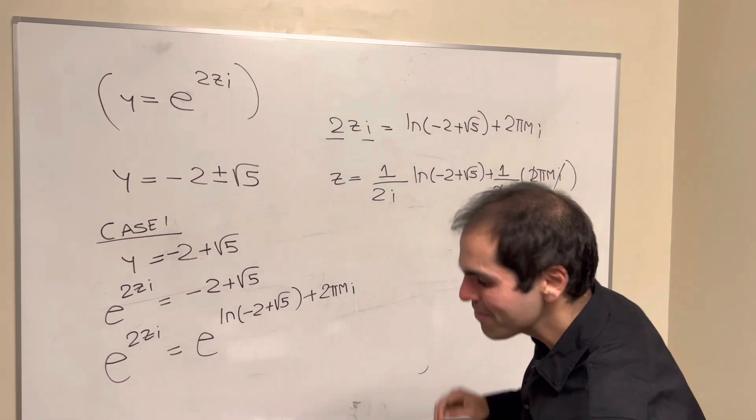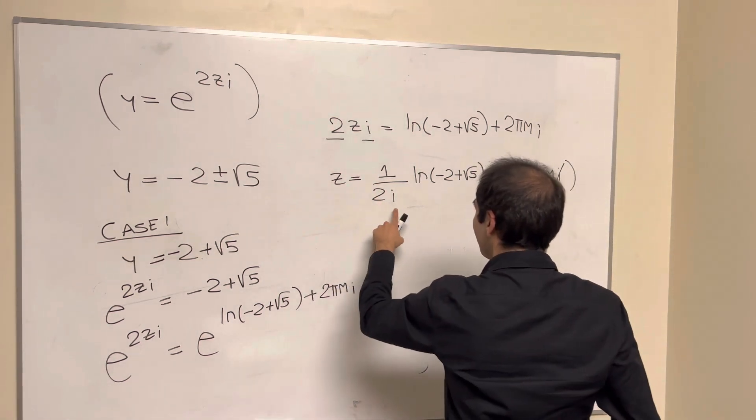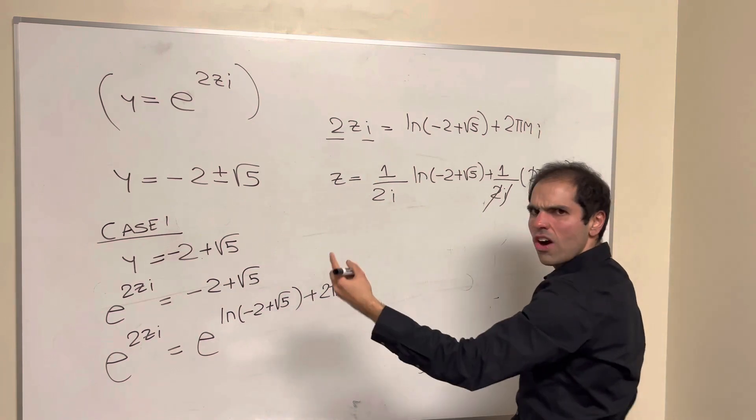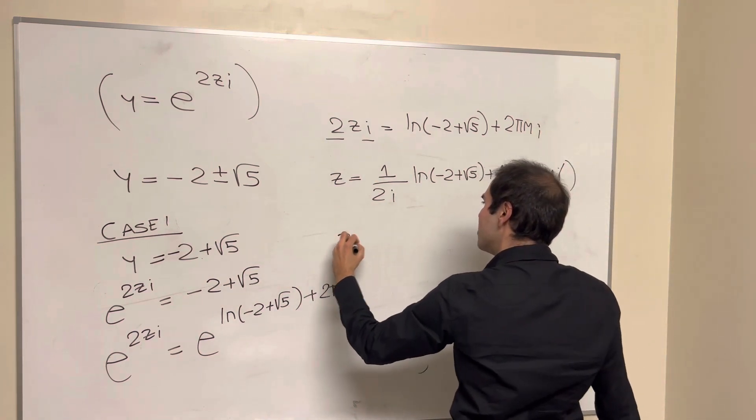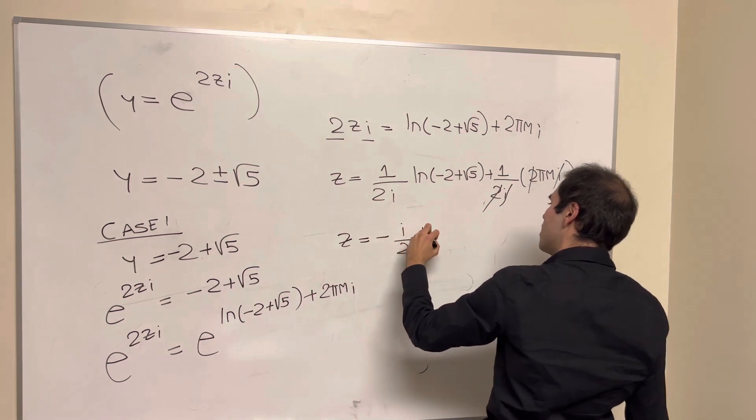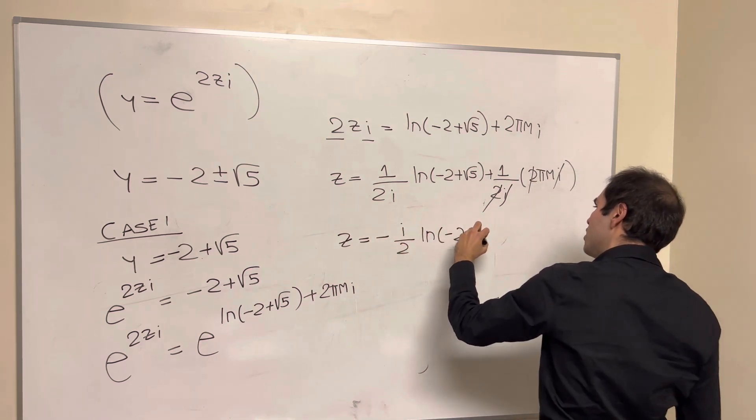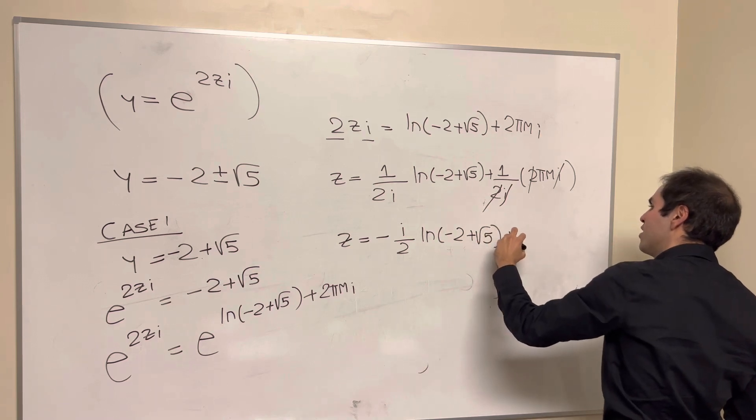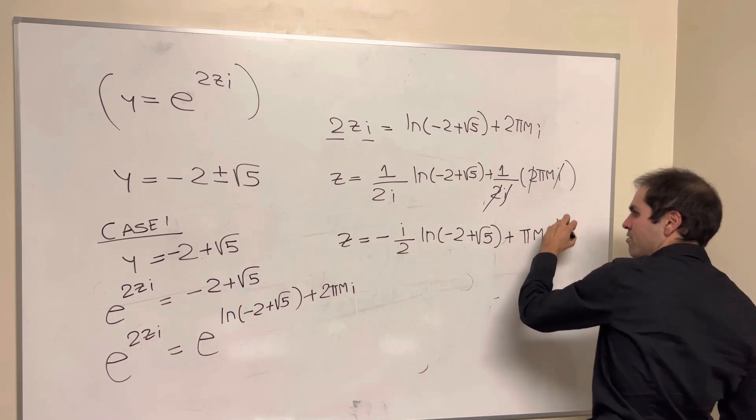And for this one, you use 1 over i is minus i, so z is minus i over 2, ln of minus 2 plus square root of 5, plus multiples of pi.